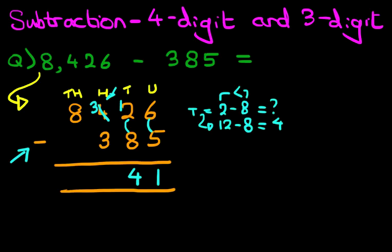Now, we are going to do the hundreds column. Don't forget the number 4 has been crossed out. We've now got 3 minus 3. 3 minus 3. Well, we know that a number minus the same number always equals 0.